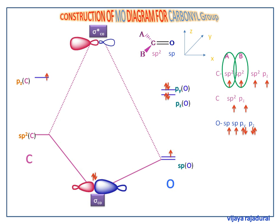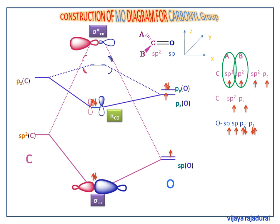This axial overlap is more efficient than lateral overlap. The carbon pz orbital overlaps with the pz orbital of oxygen to form the pi-CO bonding molecular orbital and pi-star CO anti-bonding molecular orbital. Since lateral overlap is less efficient than axial overlap, the pi-CO and pi-star CO orbitals lie at energies between sigma-CO and sigma-star CO.